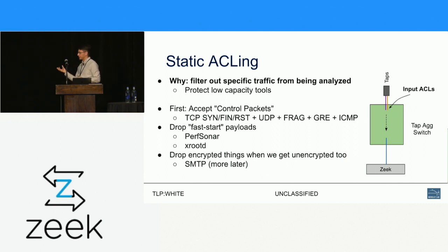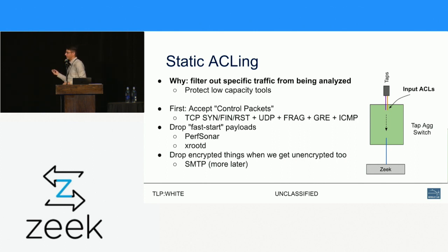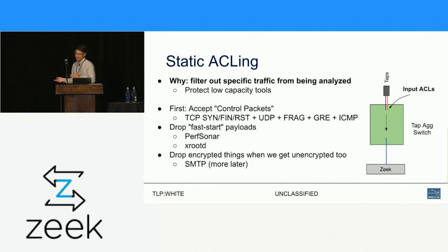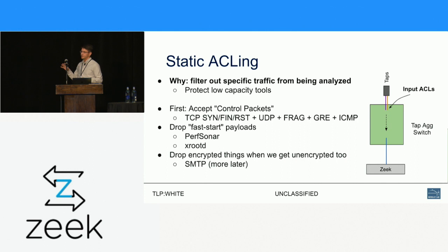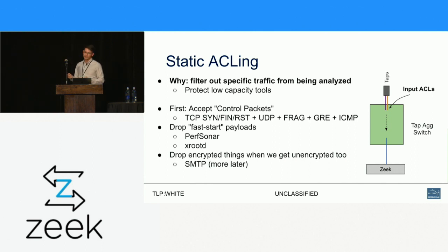On ACLs — you can do filtering with access control lists. One reason is to protect tools that can't handle high bandwidth analysis. We have one that does malware analysis: you pay for a 10 gig interface but it can really only do 2.5 to 5 gigabits per second. So we apply ACLs. At the start we accept what we call control packets — for TCP connections that's SYN, FIN, RESET; UDP packets we accept them all. We also accept fragments, GRE, and ICMP — basically the packets you need to see a connection start and finish. But then we drop payloads of protocols or applications we know will spin up to 10 or 40 gigabits per second immediately, like PerfSONAR and XRootD. We know we're not going to analyze the payload anyway, so we just don't bother sending it.